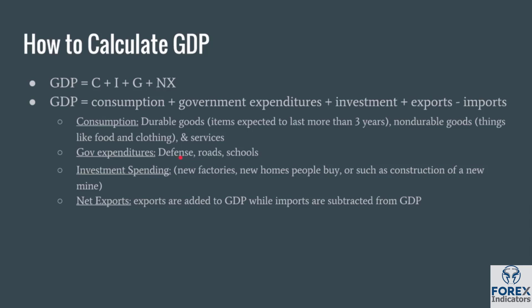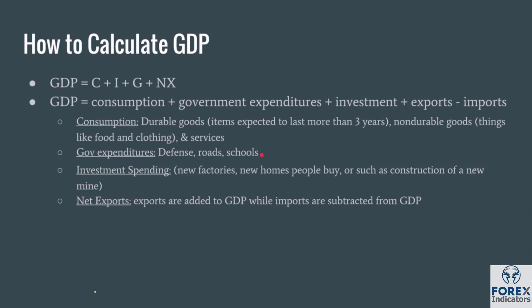Government expenditures includes things such as defense expenses, money spent on roads, and public schools. Investment spending includes things such as new factories, new homes people buy, and also the construction of a new mine — for example, a new gold or silver mine.